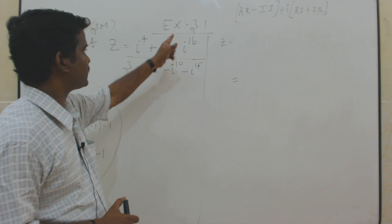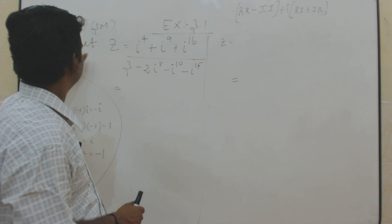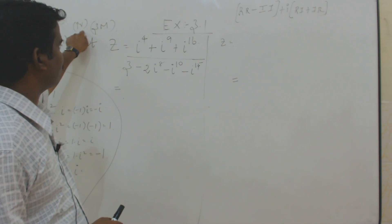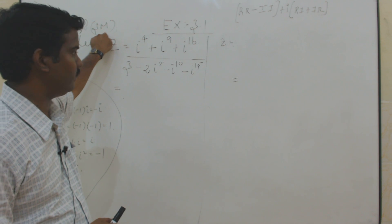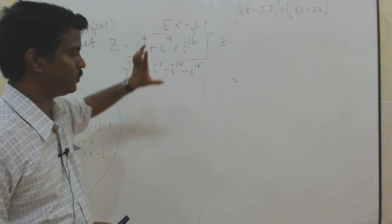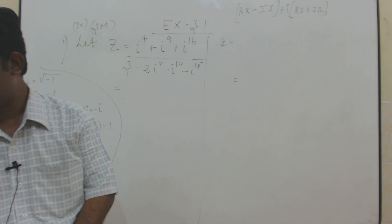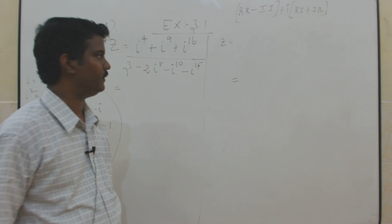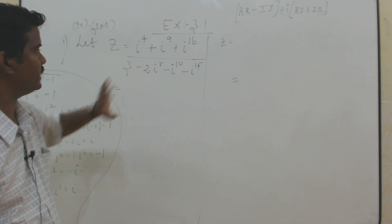We will start with the exercise — we will continue this exercise, sum number 1, subdivision 4. This problem may be asked in Class 3 math, so it is very very important. The question is: express the complex number in the standard form a plus ib.